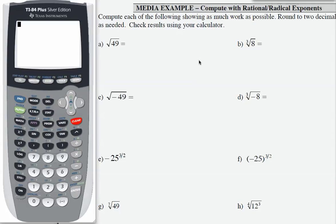Here we're asked to compute each of the following, showing as much work as possible, round to two decimals, and then check results using our calculator. So let's take these one at a time.